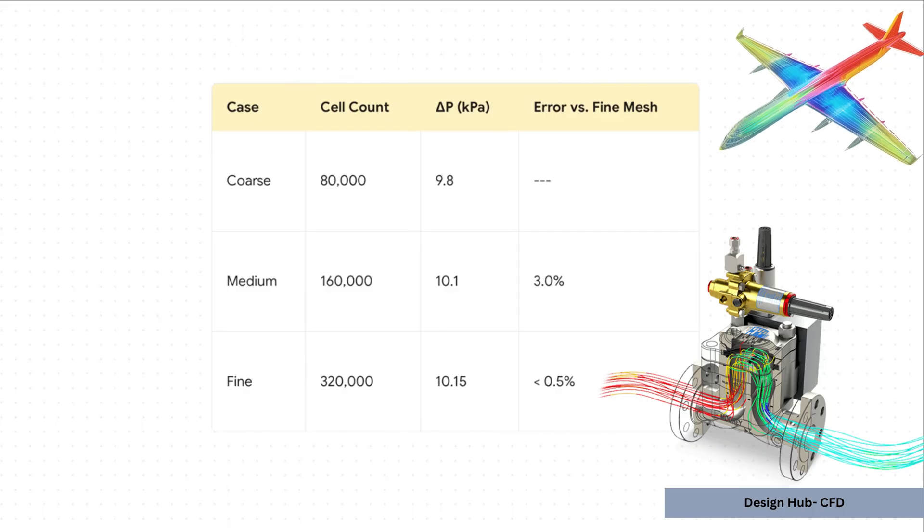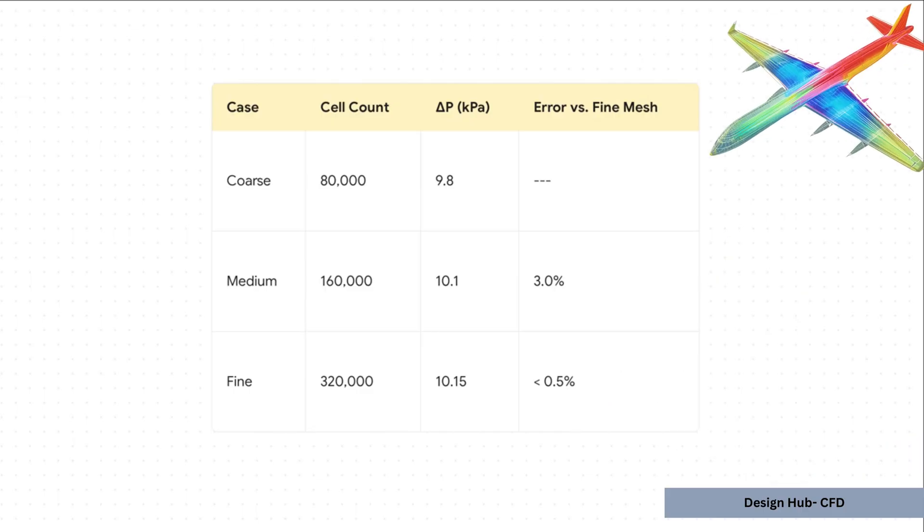So here's what that looks like in the real world. We run the same simulation three times. On our coarse mesh, we get a pressure drop of 9.8 kilopascals. Okay. Then we double the cell count and, whoa, the result jumps up to 10.1. That's a 3% change. That's a huge red flag telling us that first mesh wasn't good enough.